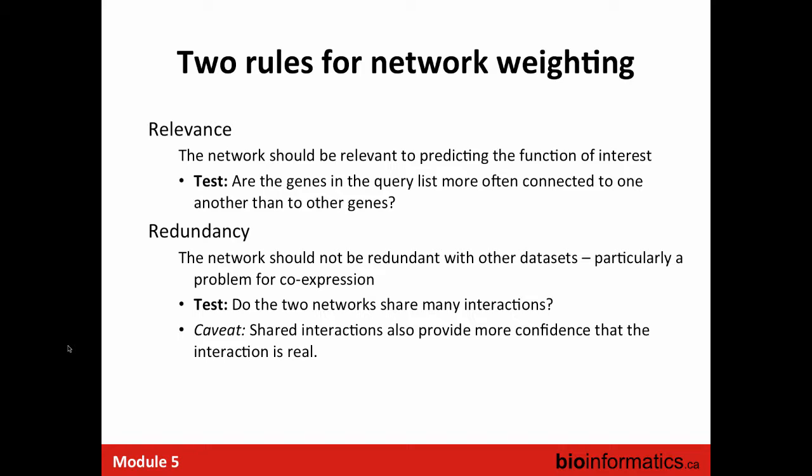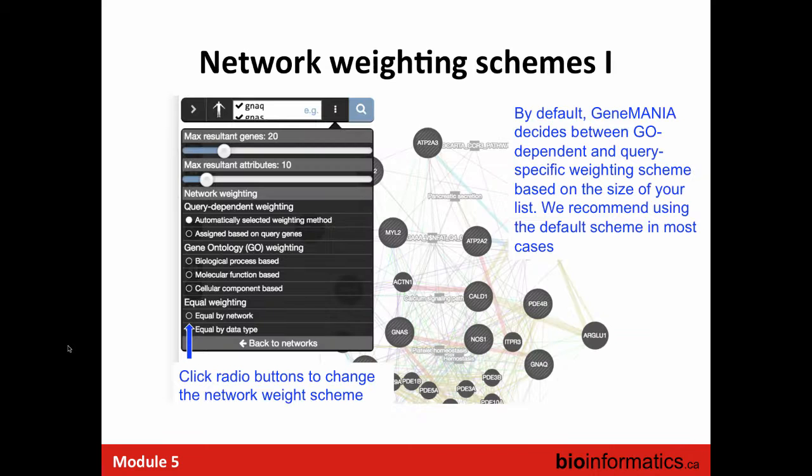I was particularly concerned about co-expression redundancy because there's a limit to what co-expression can tell you. Often co-expression tells you about whether genes are up- or down-regulated when cells are dividing, and many co-expression datasets give the same type of information, linking together genes involved in proliferating cells. So redundancy is factored into determining network weights.